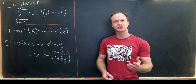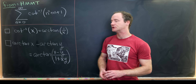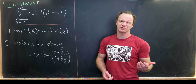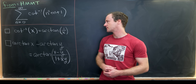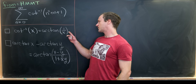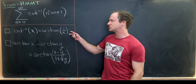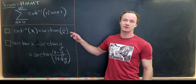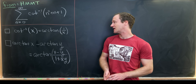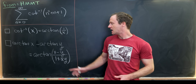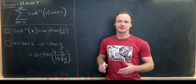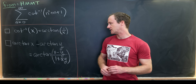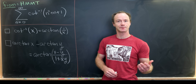We're going to use two main tools to do that, which we will derive just for completeness here. The first is a relationship between the inverse cotangent and the inverse tangent, and the second one is a difference formula for the inverse tangent.